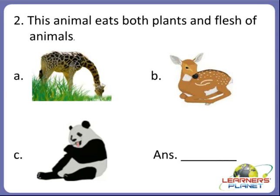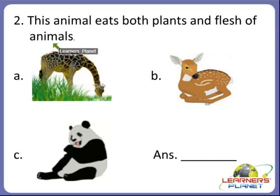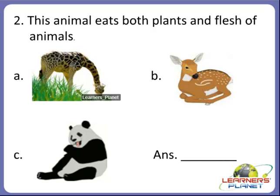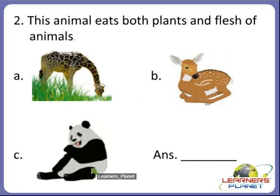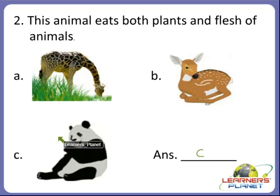Now the next question: this animal eats both plants and flesh of animals. See the options — which is the correct one? Is it a giraffe, is it a deer, or a bear? Does a giraffe eat both plants and flesh of animals? The correct option is C, that is a deer. A deer is an animal that eats both plants and flesh of animals.